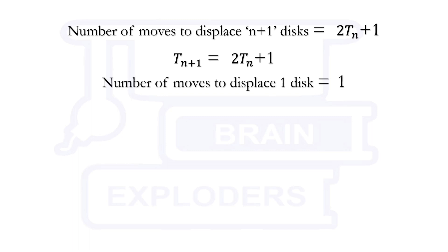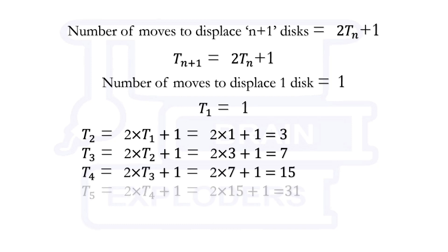Now, we know that number of moves to displace 1 disk is equal to 1. So, we can write T1 is equal to 1 and applying the concluded progression, we can calculate T2 is equal to 2 times T1 plus 1 that is 3 and similarly, T3 is equal to 2 times T2 plus 1 that is 7 and in this way, we get T5 is equal to 31.